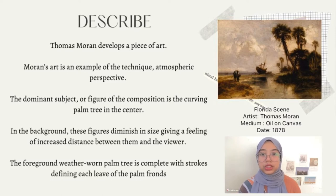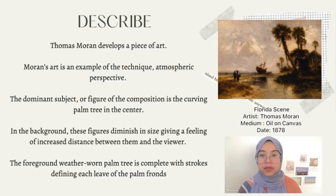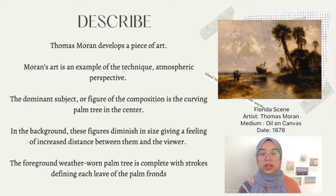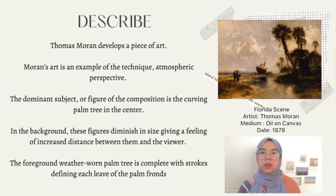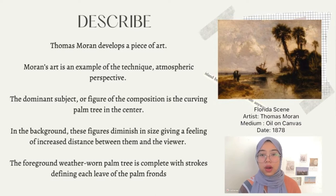These figures diminish in size, giving a feeling of increased distance between them and the viewer. These faraway objects are seen beyond an increased quantity of air, moisture, and sandy haze, causing them to appear much less clear and less dense than the foreground. One palm tree is complete with strokes defining each leaf of the palm frond, and intricate rings decorating the bark of the trunk.